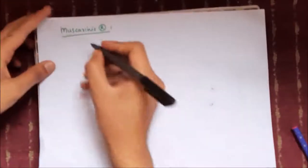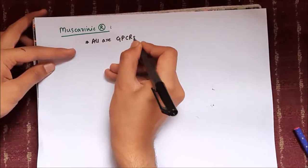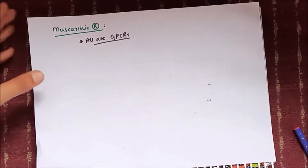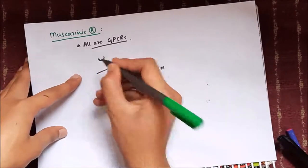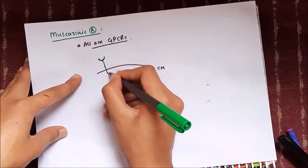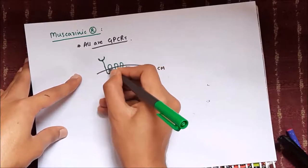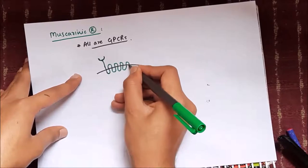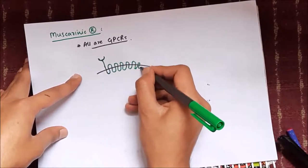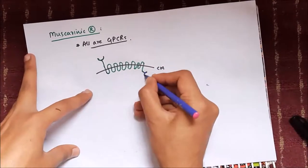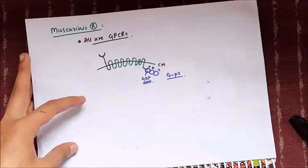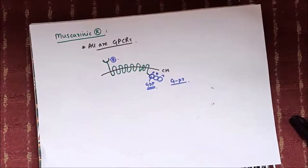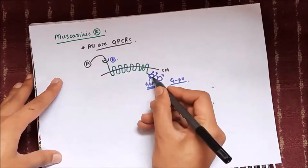All types of muscarinic receptors are examples of G protein coupled receptors. A G protein coupled receptor has a ligand-binding part on the outer side, passes through seven transmembrane folds, and on the intracellular side binds to G proteins — alpha, beta, and gamma subunits — where the alpha subunit is attached to GDP.